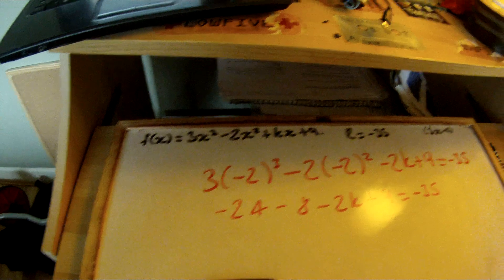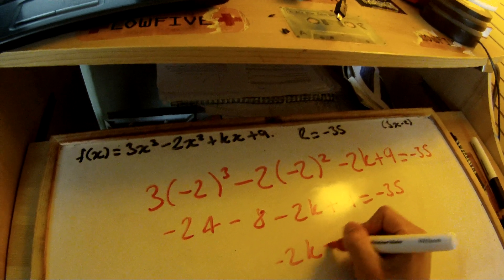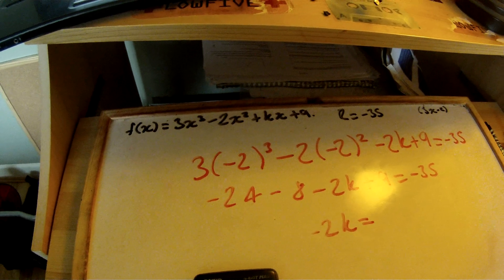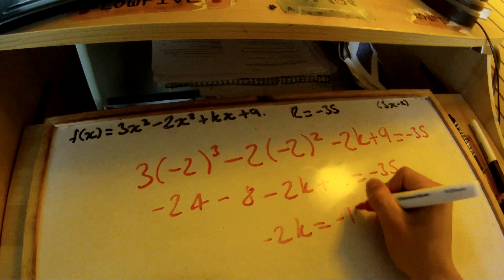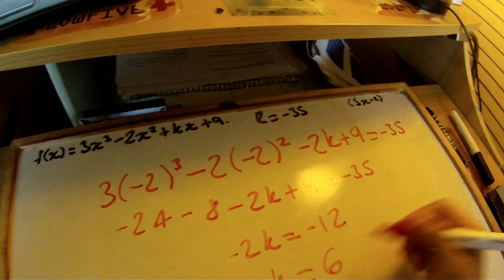Simplify it even more. You get minus 2k equals minus 12. Solve for k and k equals 6. That's part A.